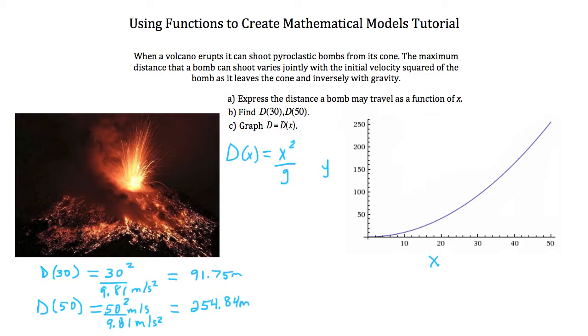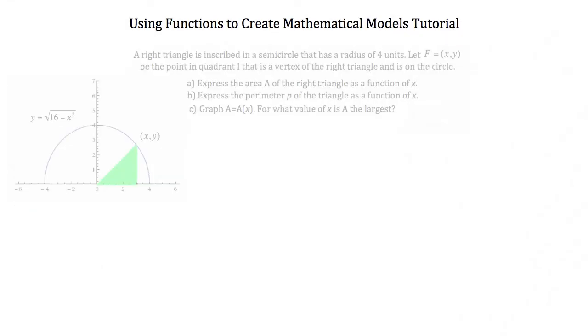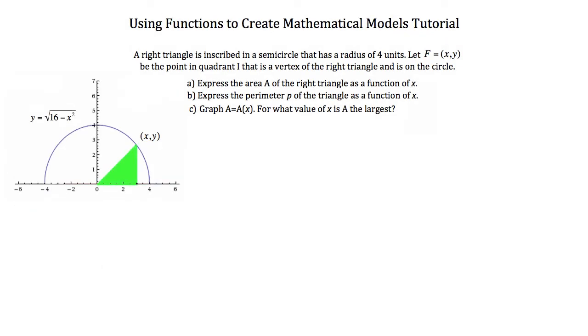Now let's take a look at another math model. A right triangle is inscribed in a semicircle that has a radius of 4 units. Let P equal f(x,y) be the point in quadrant 1 that's a vertex of the right triangle and is on the circle. Here's our drawing over here on the left. You'll notice that this is the point P here, that x,y-coordinate right there on the edge of our circle, and it's inside quadrant 1 of our graph.